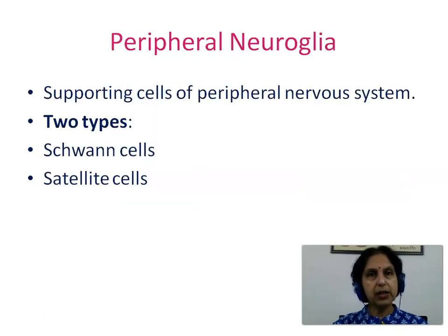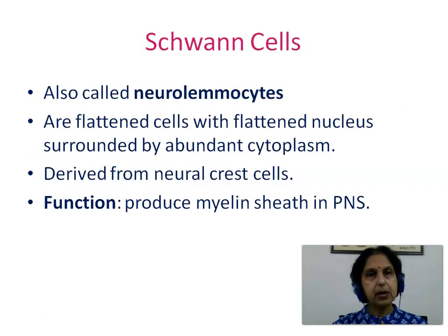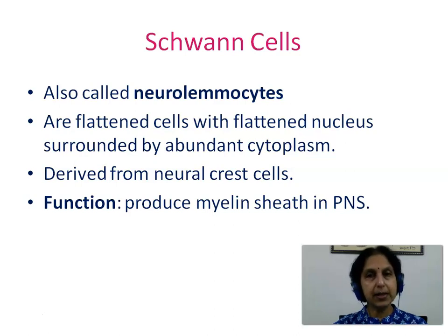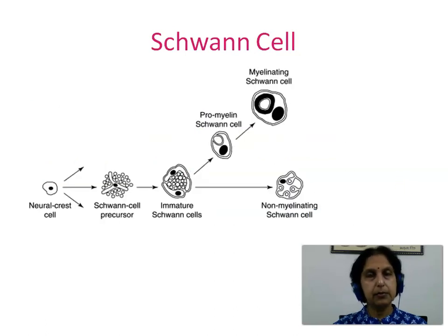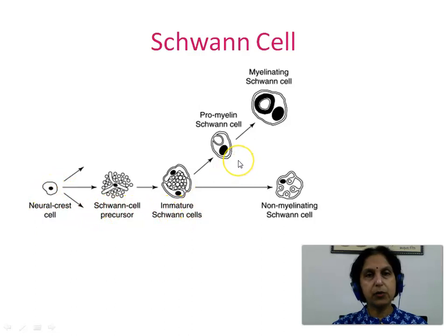The peripheral neuroglia are supporting cells of the peripheral nervous system, of two types: Schwann cells and satellite cells. Schwann cells, also called neurolemocytes, are flattened cells with a flattened nucleus surrounded by abundant cytoplasm. They are derived from the neural crest cells, and their function is to produce the myelin sheath in the peripheral nervous system. This picture shows how neural crest cells give rise to Schwann cells, how the Schwann cell forms the myelin sheath, and also the non-myelinating Schwann cells.